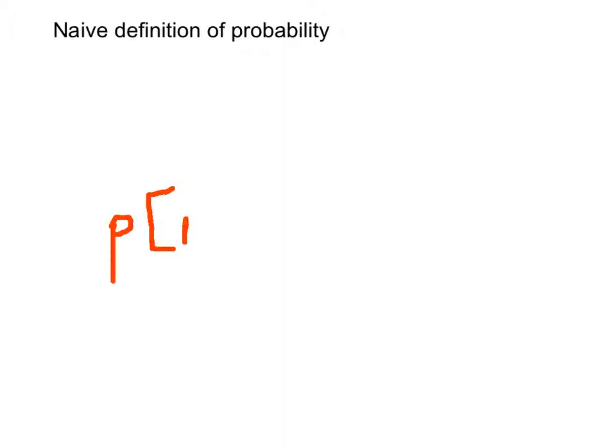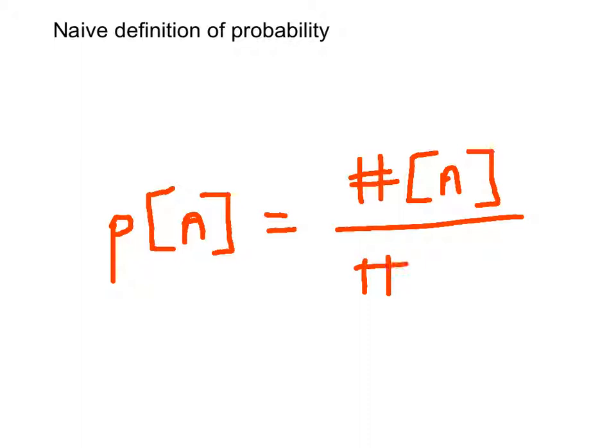And essentially what we're going to say is that the probability of some event A, which we denote by small p, is given by the number of ways in which A can occur divided by the total number of things that can happen in the sample space.